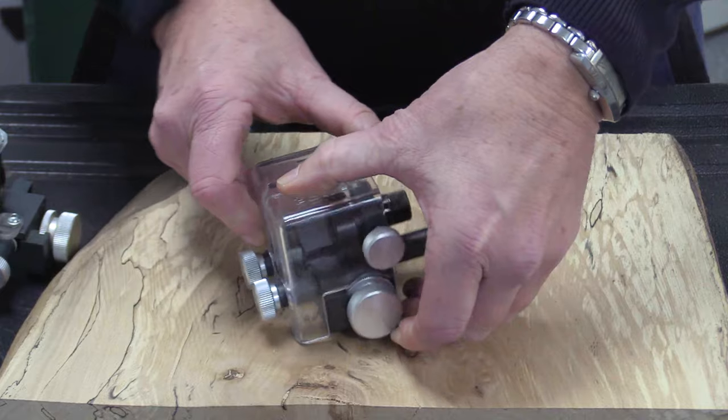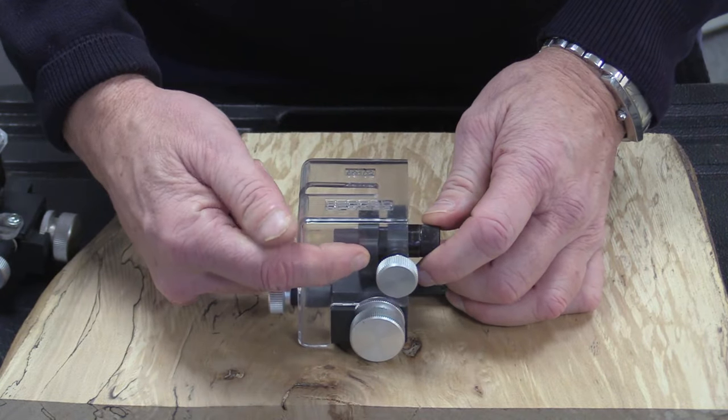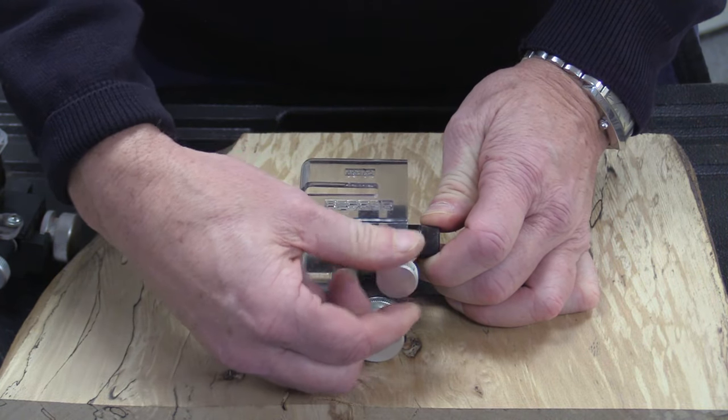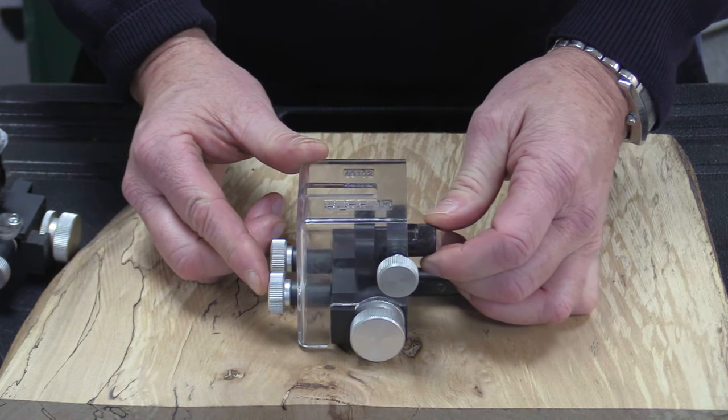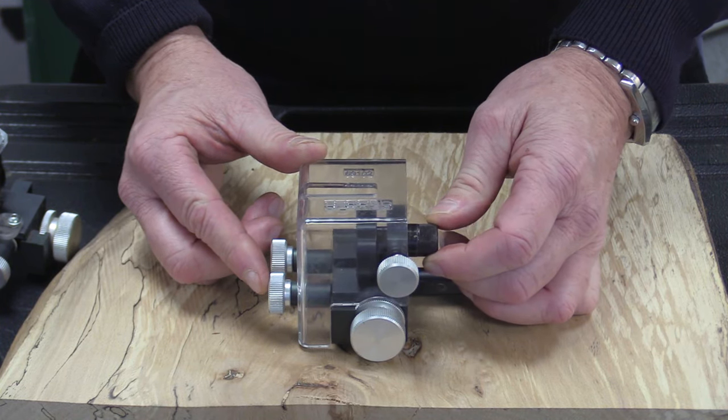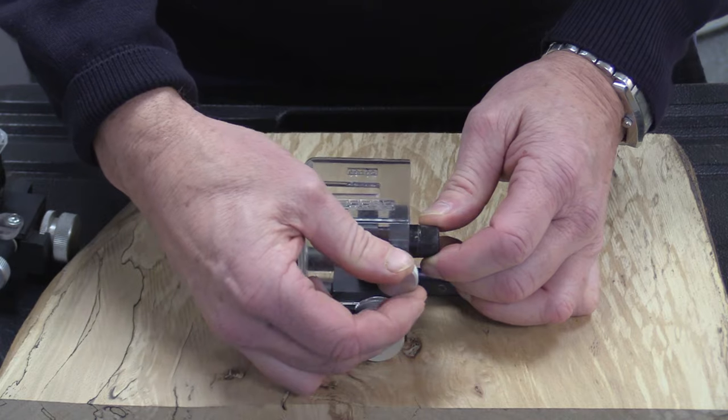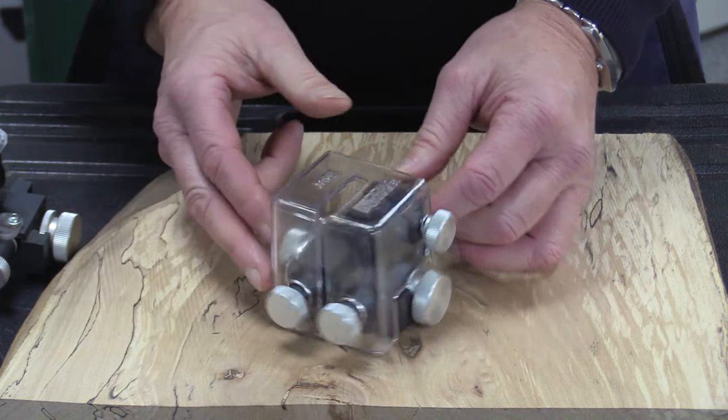What we've also got there is the thrust rod that you can see and again we just loosen off before adjusting forward or back to support the back end of the blade before locking off and that's a bearing on that one on the thrust.